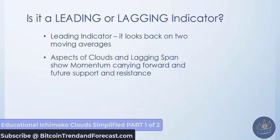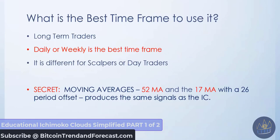Is it a leading or lagging indicator? The Itchy Moco Cloud is considered to be a leading indicator because it looks back on two different moving averages — the 9 and the 26. The lagging span shows momentum carrying forward into the future support and resistance. So they actually consider it a leading indicator instead of a lagging one. For long-term traders, the best time frame is the daily or the weekly.